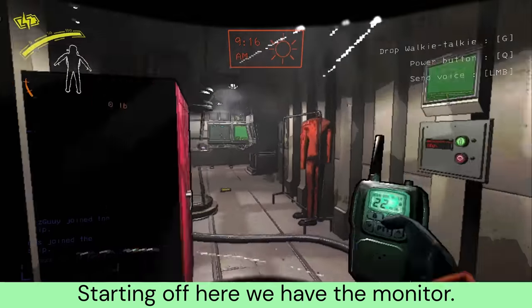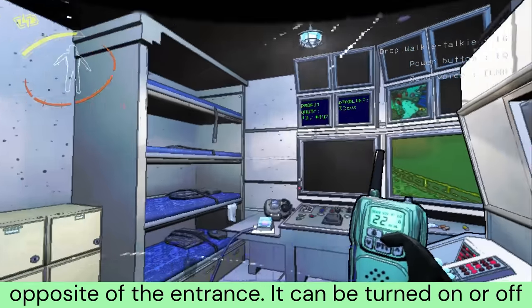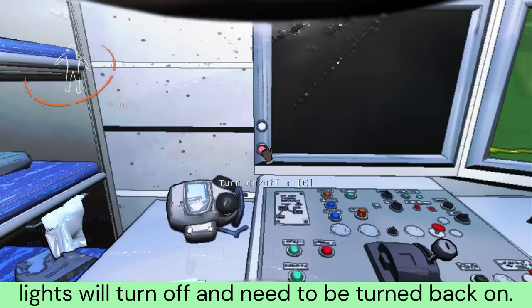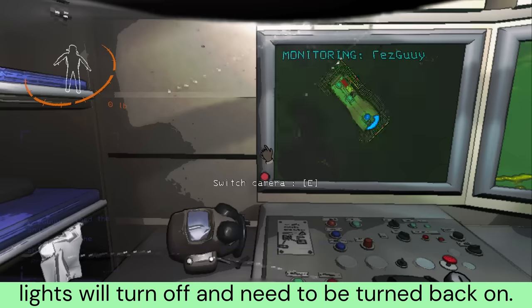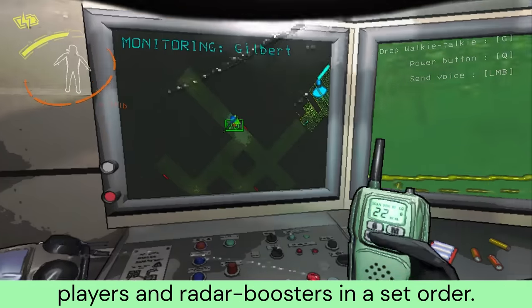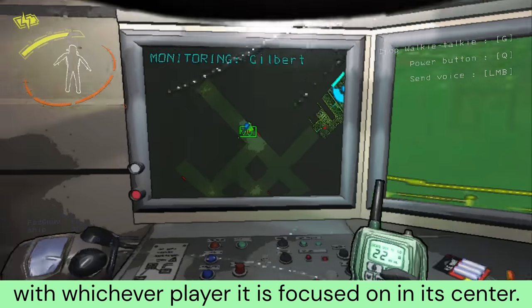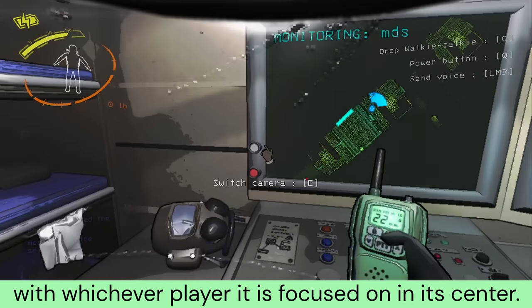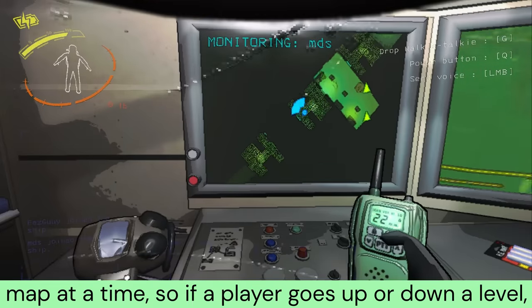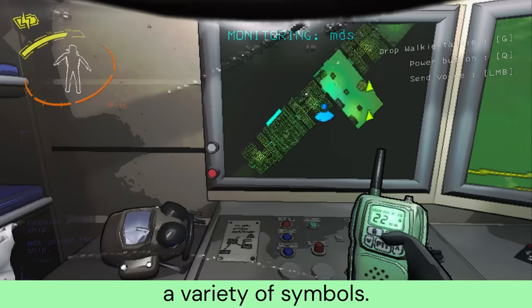Starting off here we have the monitor. The monitor is locked at the end of the ship opposite of the entrance. It can be turned on or off with the red button found in its lower left corner. If lightning ever strikes the ship, the monitor and lights will turn off, and need to be turned back on. The gray button just above the red one will change the display of the monitor. The monitor displays the map from a top-down view, with whichever player it is focused on, in its center.